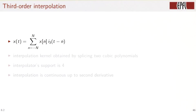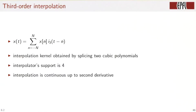x of t is a linear combination of i3 in these shifted versions. The interpolation kernel is put together from two cubic polynomials. The support is of length four, and this one is continuous up to second derivative.